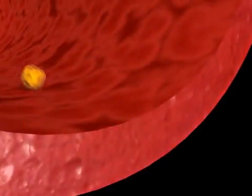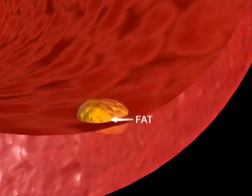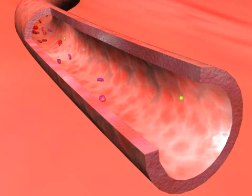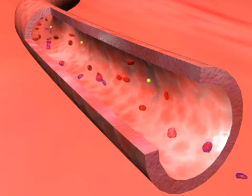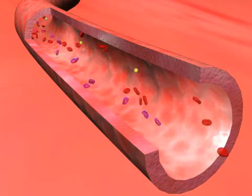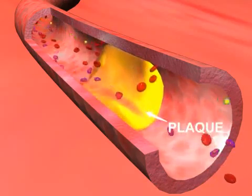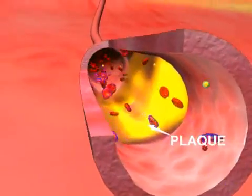Over time, the inside of these arteries develop fibro-fatty plaques of different sizes. These plaques are made of cholesterol and other substances floating through the bloodstream, such as inflammatory cells, proteins, and calcium. Many of the plaque deposits are hard on the outside and soft on the inside.